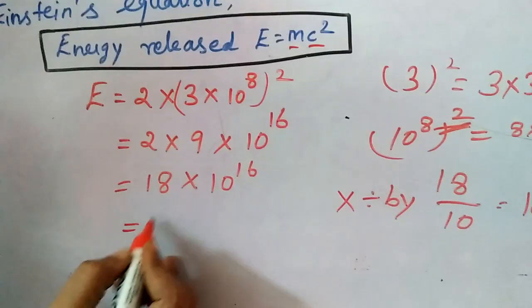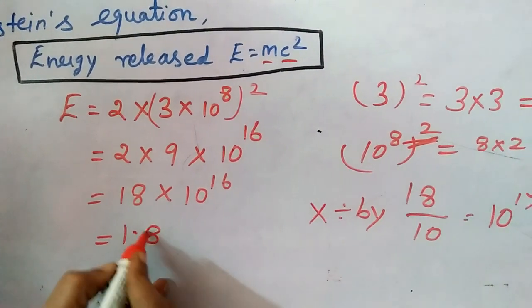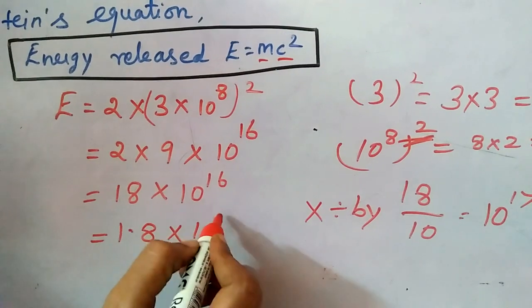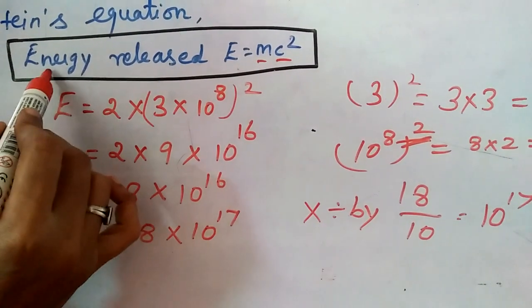So 10 power 17. Here multiply by 10 means 1.8 into 10 to the power of 17.